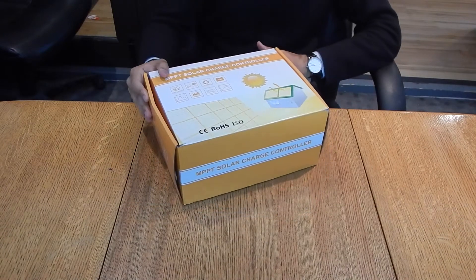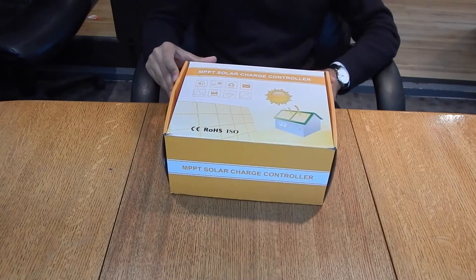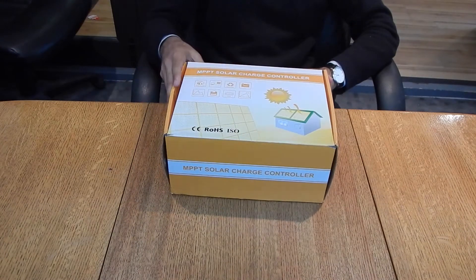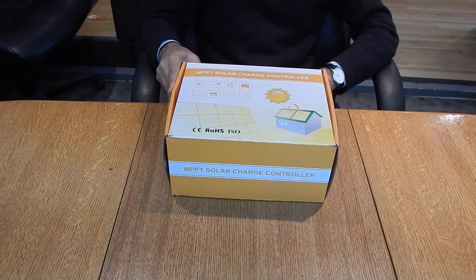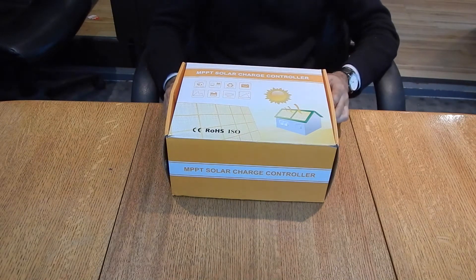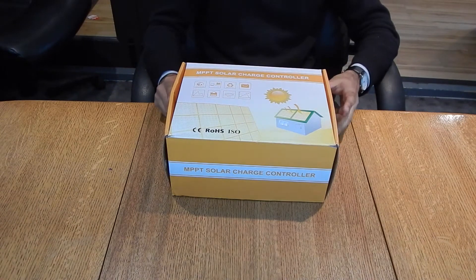This is the ML2430 model, the 30 amp version. You can also find a 40 amp charge controller option. Since this is the 24 volt model, there's also a 48 volt one available with 30 amp or 60 amp options.